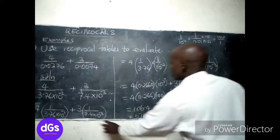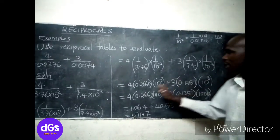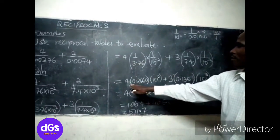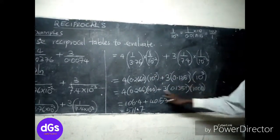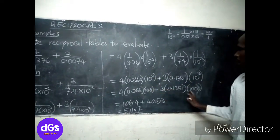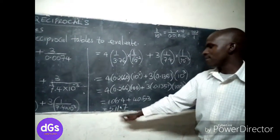Then from there, we get this separately as we have done here, and also this separately. Then finally, you multiply, then finally you add the two, and you are getting 511.7.